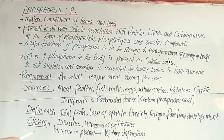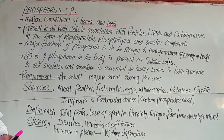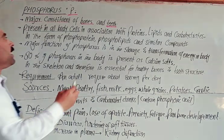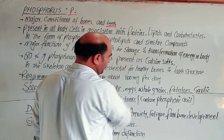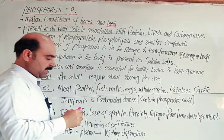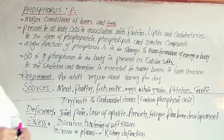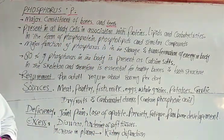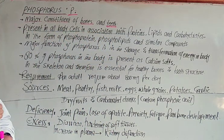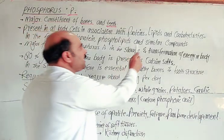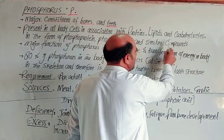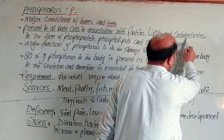Second, phosphorus is present in all body cells. This is an important point — phosphorus is present in all body cells in association with proteins. It is not in a free state; it is combined with proteins or lipids.